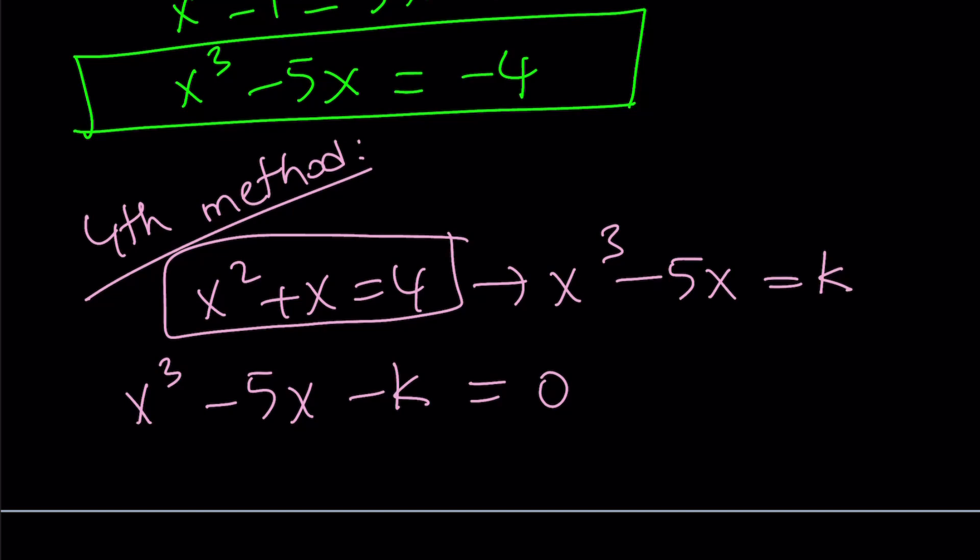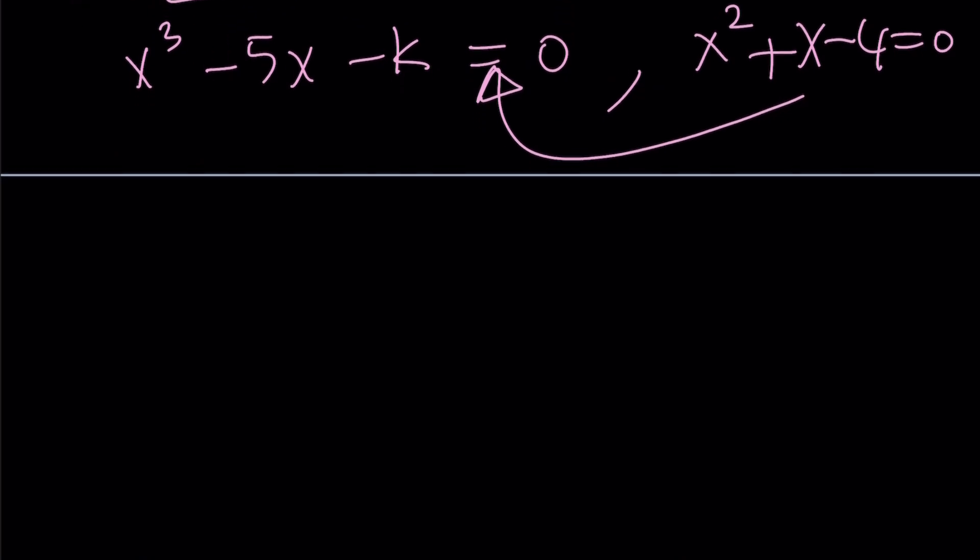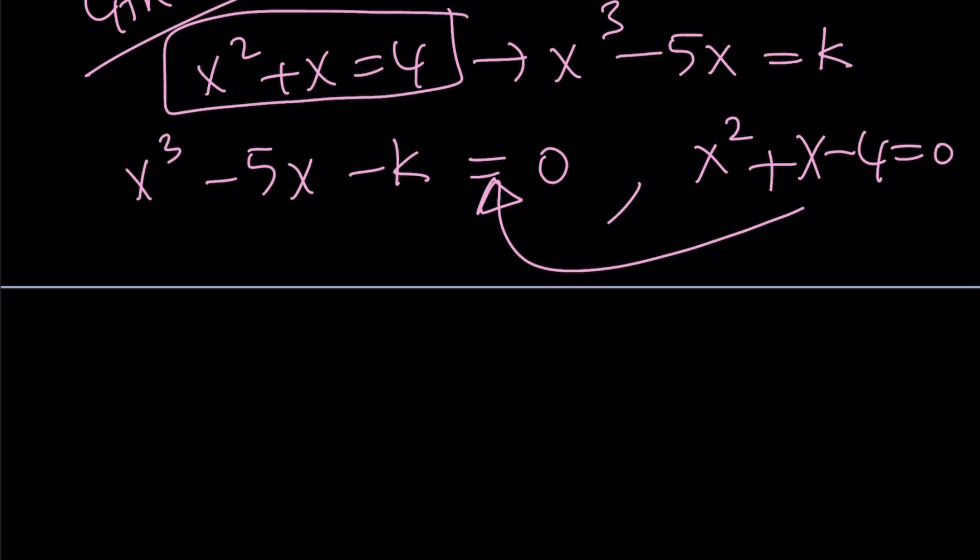It means that this cubic shares roots with the quadratic. In other words, the cubic must be divisible by the quadratic. What quadratic are you talking about? I'm talking about x squared plus x minus 4. If they have common roots, because this kind of implies this, right? But the cubic may have extra roots, obviously. That's cubic. So the cubic is divisible by the quadratic.